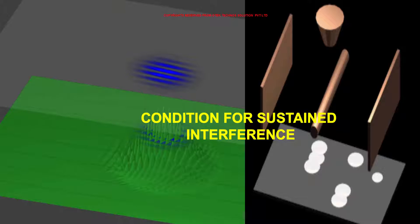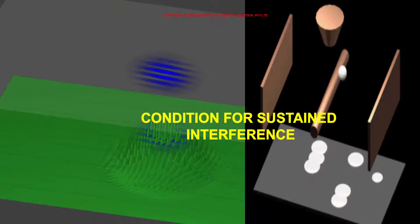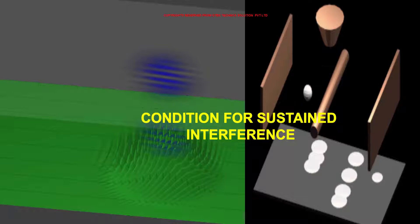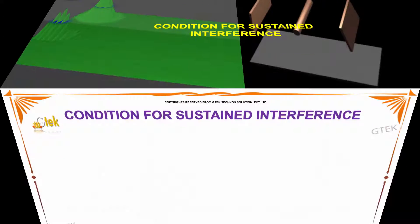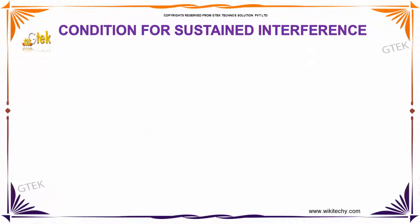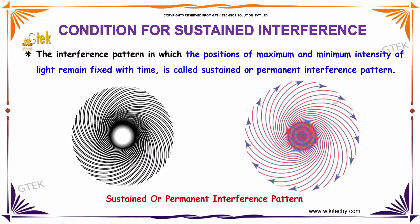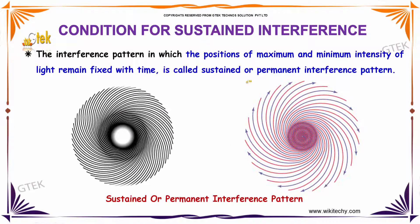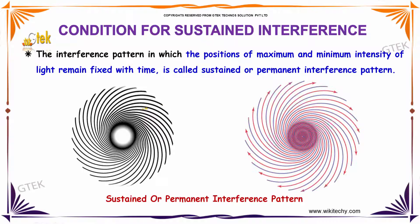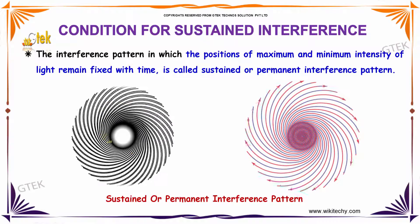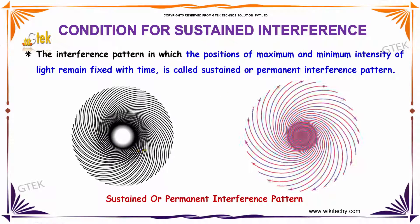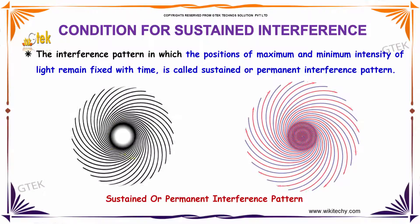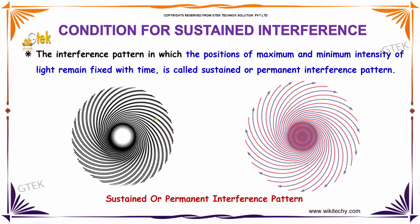The condition for sustained interference. The interference pattern in which the position of maximum and minimum intensity of light remains fixed with time is referred to as a sustained or permanent interference pattern.